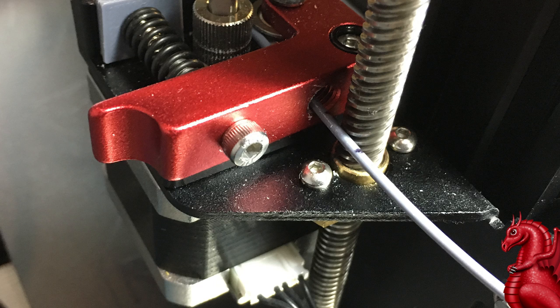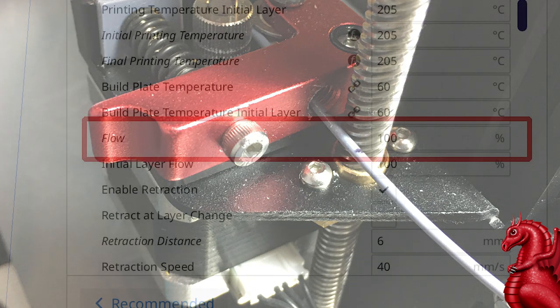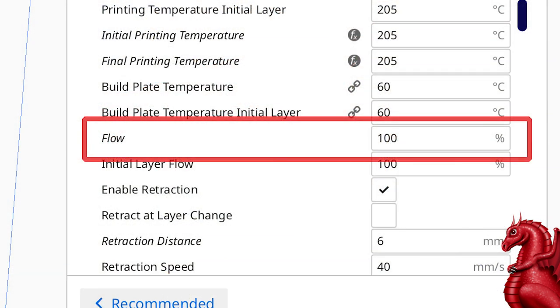Next step is to calibrate your flow. We know it's feeding the right amount of filament through, but that doesn't always mean our slicer is going to calculate things right. So the second phase of this is finding out the correct flow number for your slicer. What I want you to do is whatever profile you're using, change the flow to 100 percent.